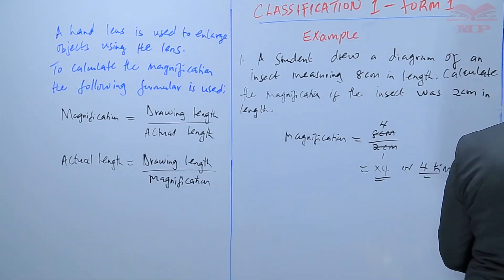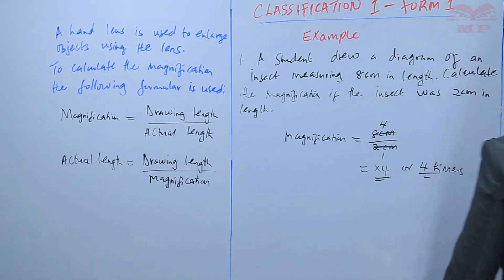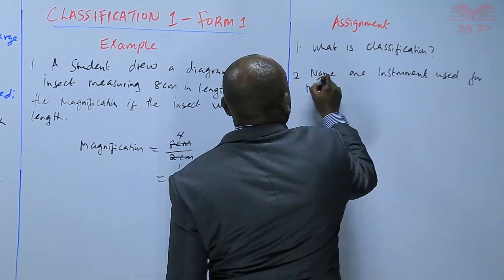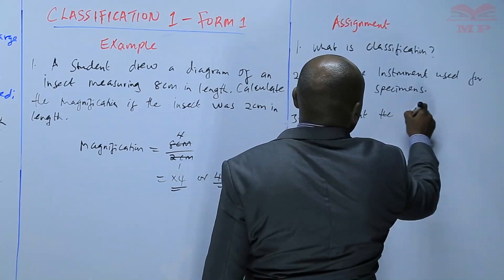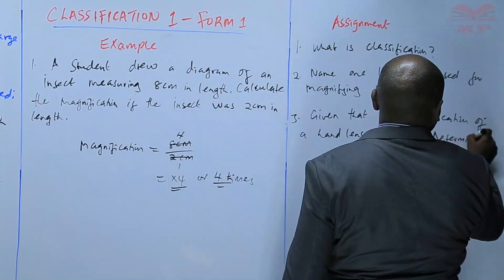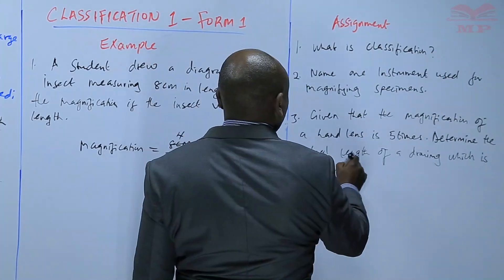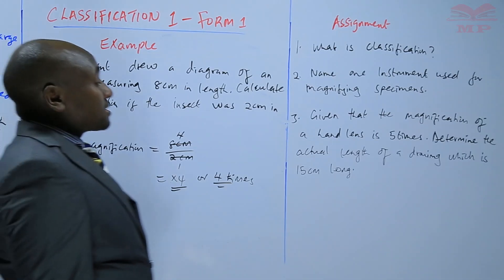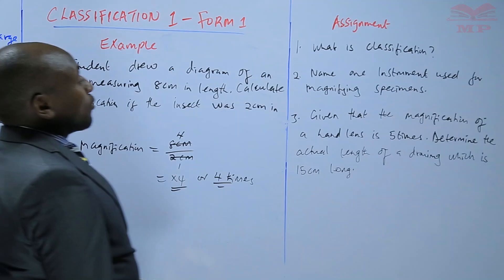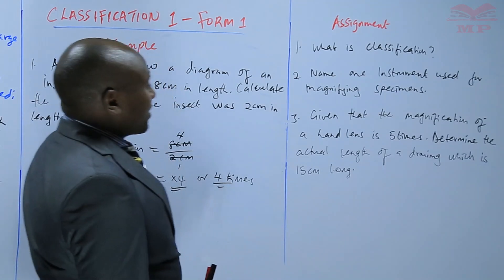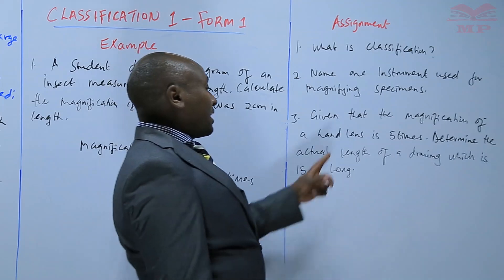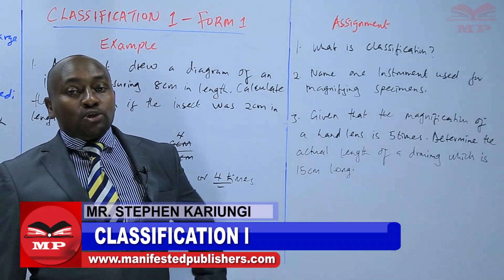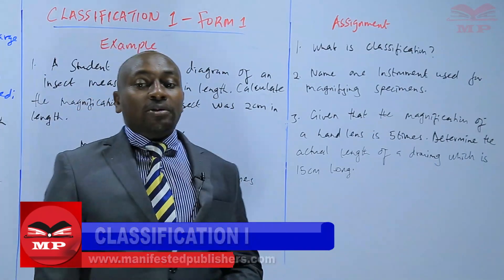You are going to have an assignment. The first question: what is classification? The second question: name one instrument used for magnifying specimens. And number three: given that the magnification of a hand lens is 5 times, determine the actual length of a drawing which is 15 centimeters long. We will stop there for today and continue from there next time.